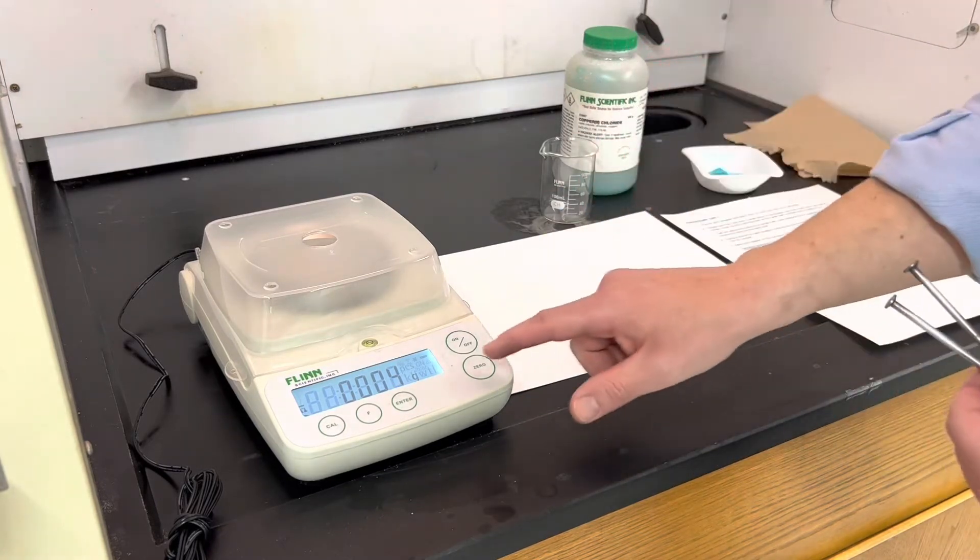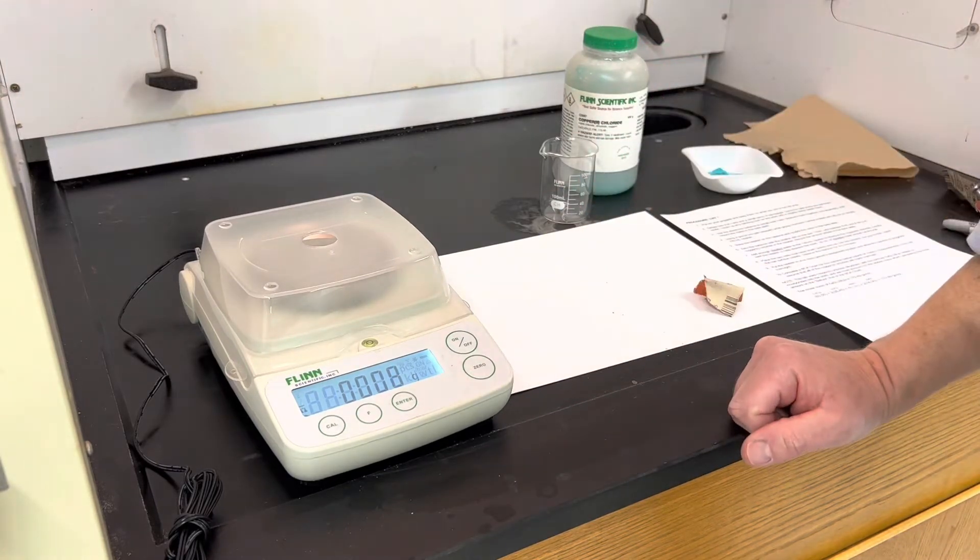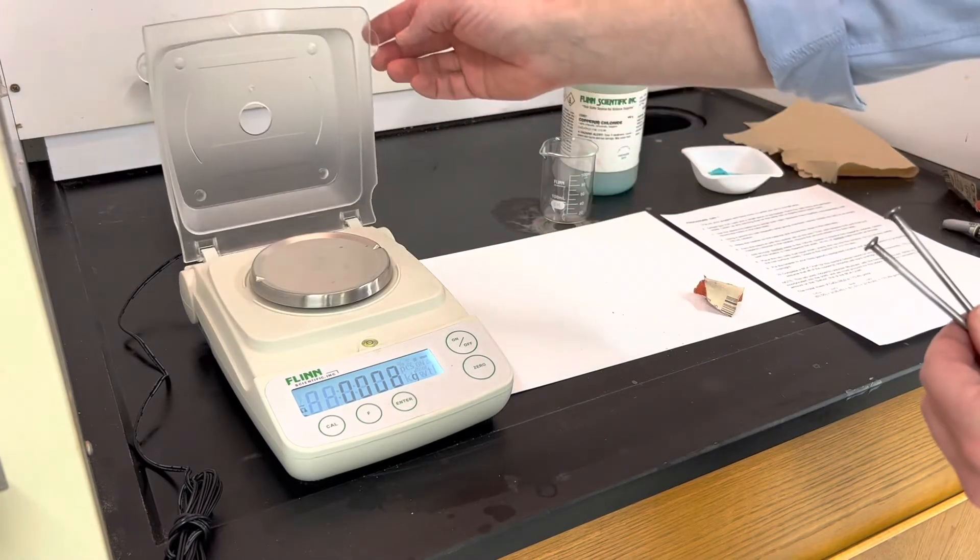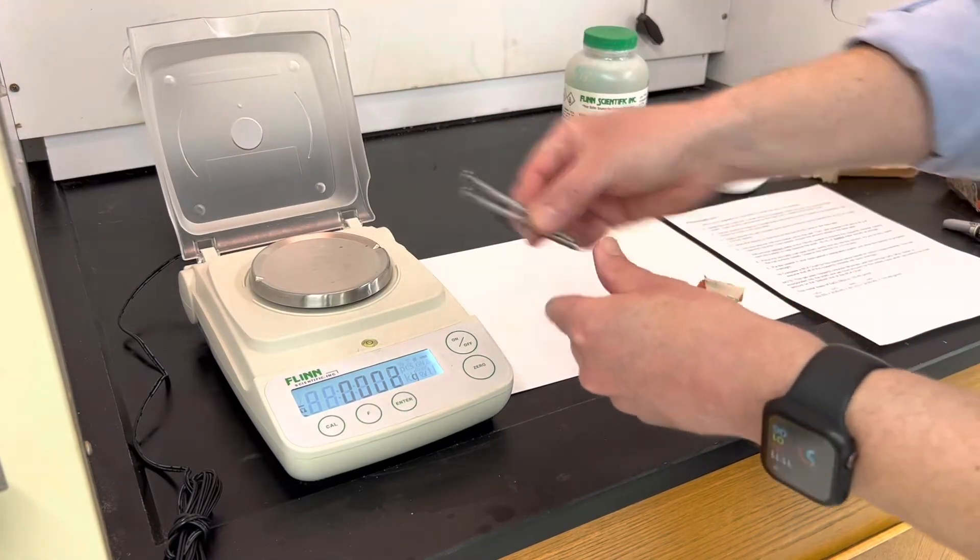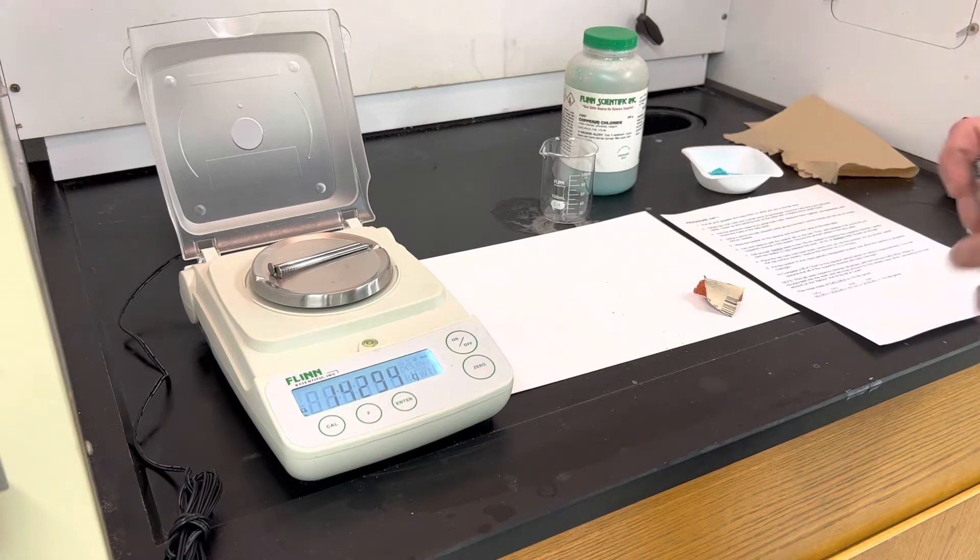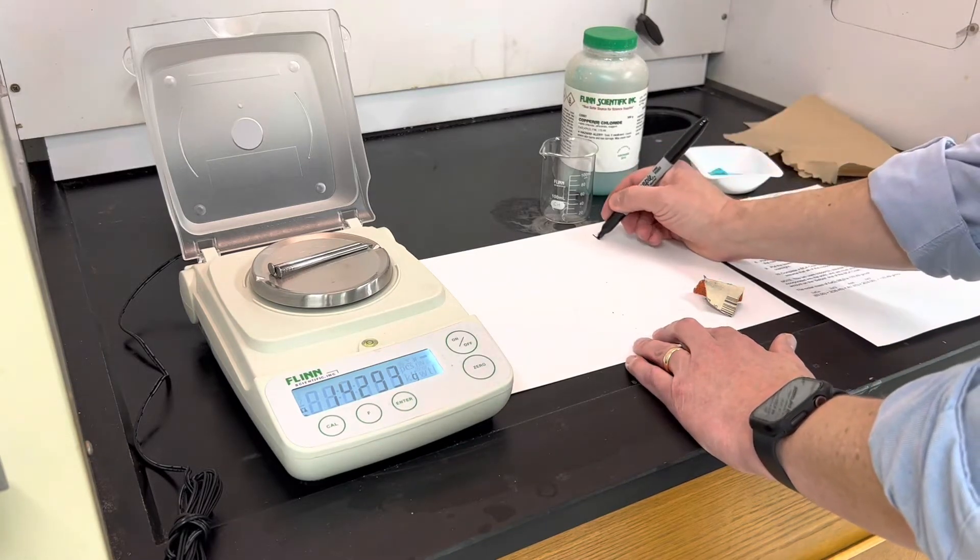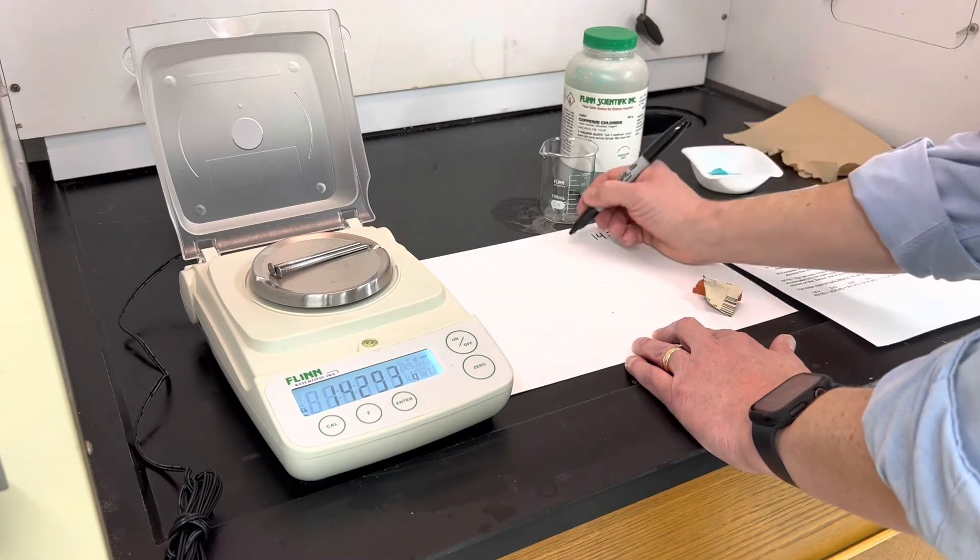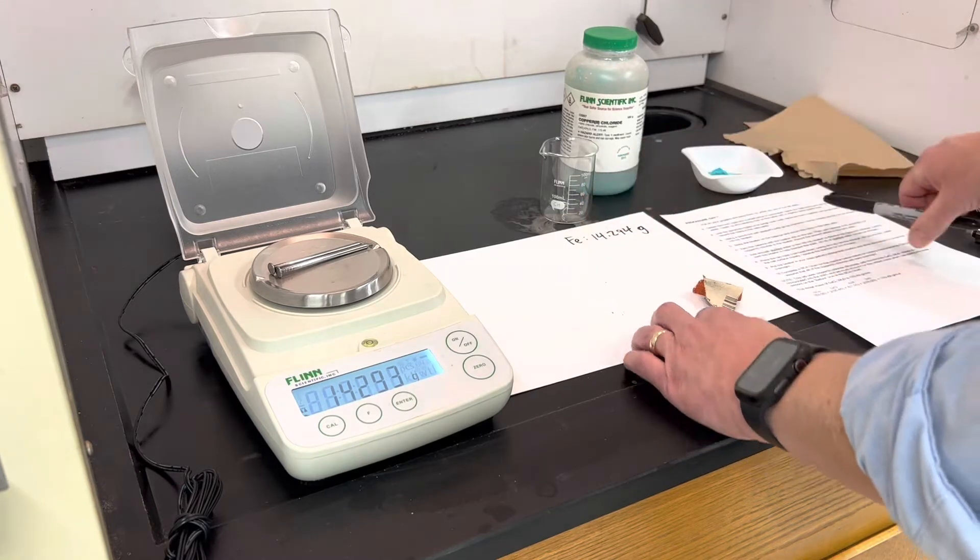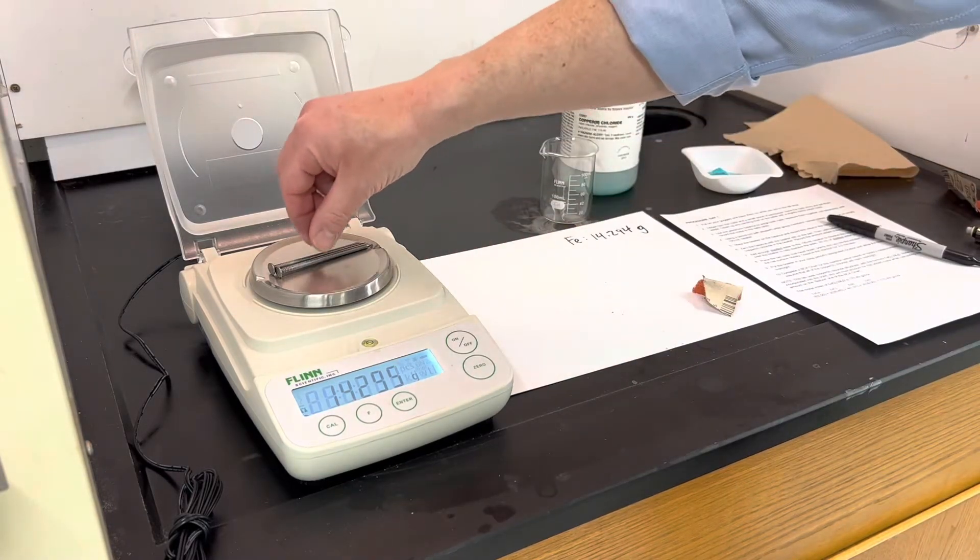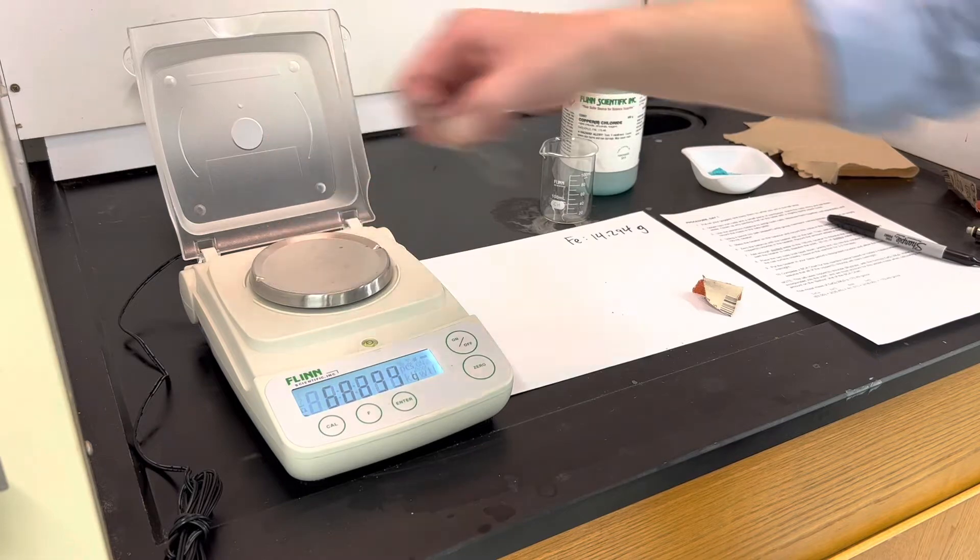Next I want to get the mass of these nails. So I'll make sure my balance is zeroed. This is our most sensitive balance so it fluctuates a little bit. And I'll go ahead and put those on the pan. And I'm going to jot down that number: 14.294 grams. That is the iron. And it's fluctuated a little bit, but again, a thousandth of a gram is a very small amount. I'm not too concerned about that.